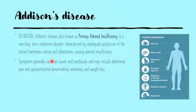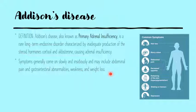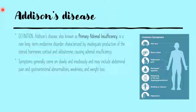The symptoms of Addison's disease are quite slow in onset and may be insidious. They can include abdominal pain, gastrointestinal abnormalities, weakness, and weight loss. But perhaps the most characteristic symptom is the darkening of the skin — basically hyperpigmentation — and we will explain why in the pathogenesis of this disease.